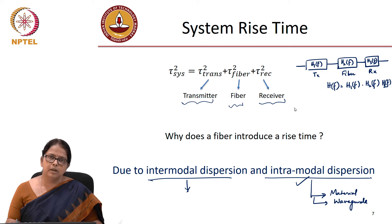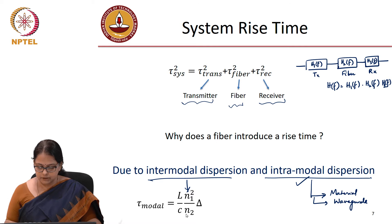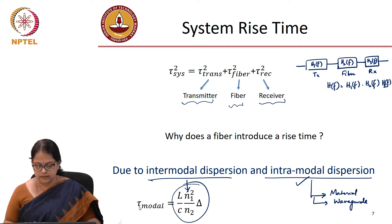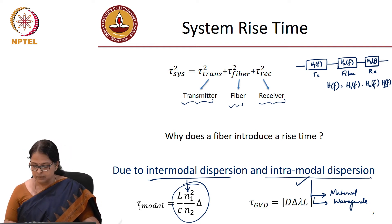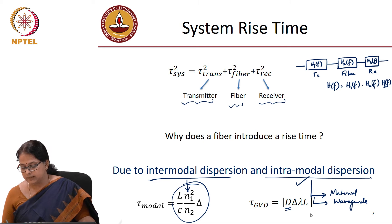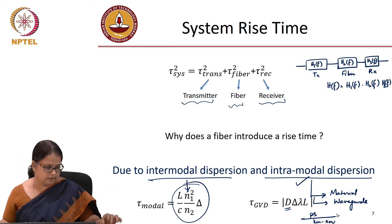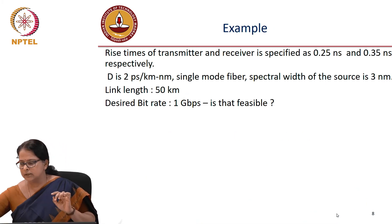We have enough information to calculate each of these. τ_modal is given by a relation involving N1 (core index) and N2 (cladding index), where delta is (N1 - N2) / N2. The GVD — group velocity dispersion due to material and waveguide dispersion — is represented by the number D in picoseconds per kilometer-nanometer. You can calculate the spread due to GVD. So let us now do some examples.